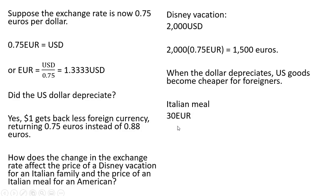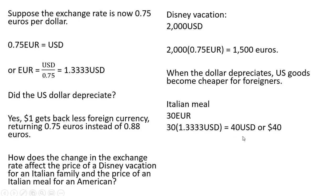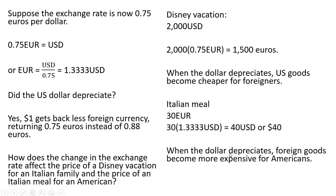As for the Italian meal at 30 euros, we're going to make a substitution for the euro, plugging in 1.33 US dollars. Now that Italian meal has a price of $40. When the dollar depreciates, foreign goods become more expensive for Americans. Okay, that's it for my examples.